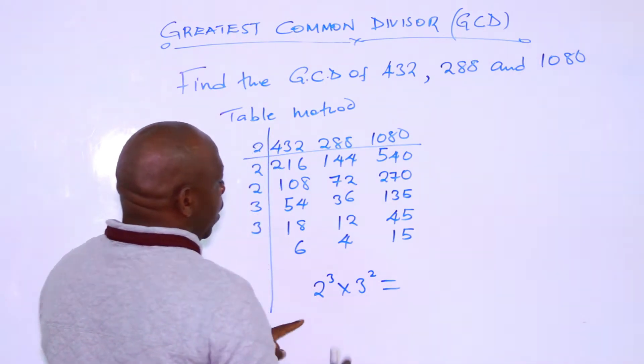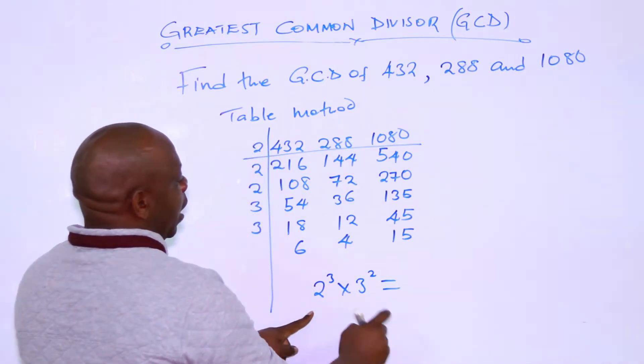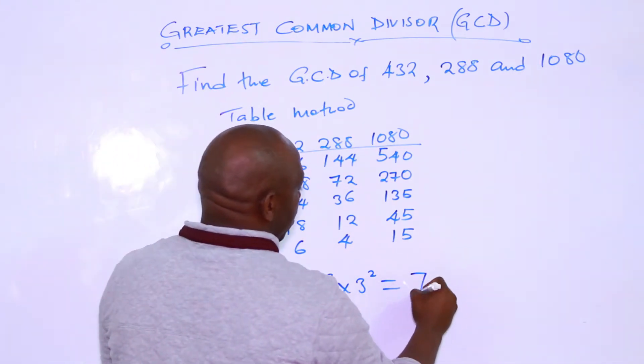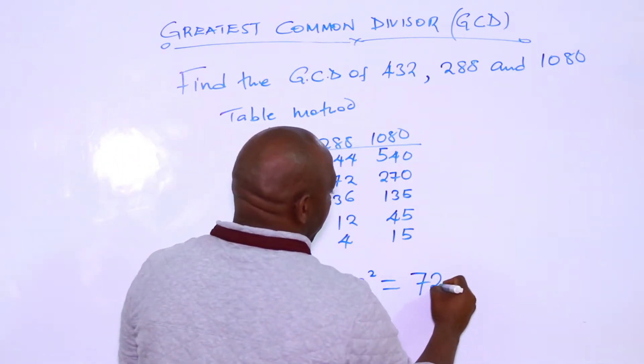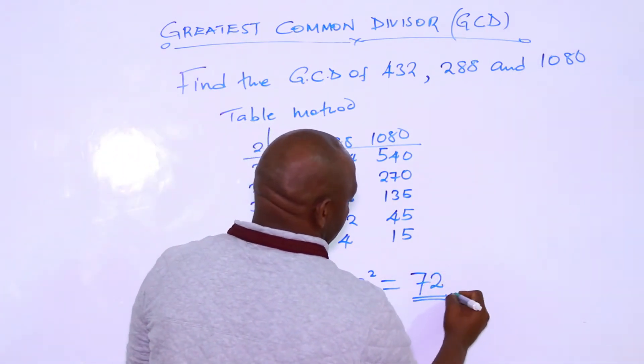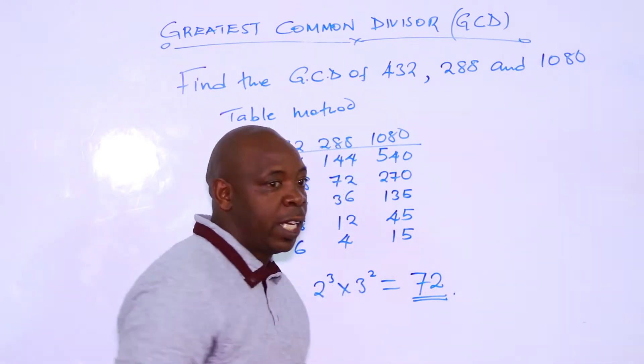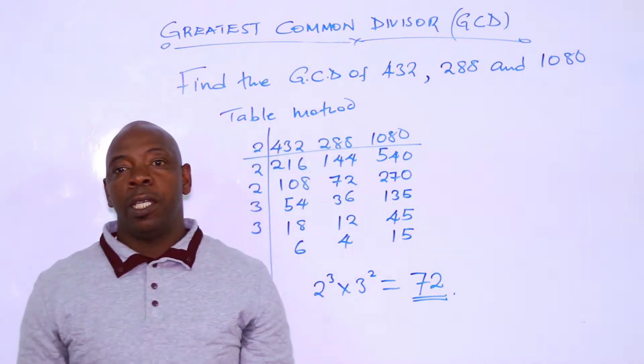And that will give us 8 times 9, which is 72. That's our GCD.